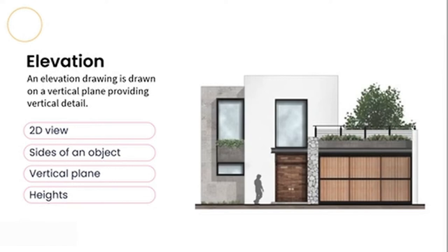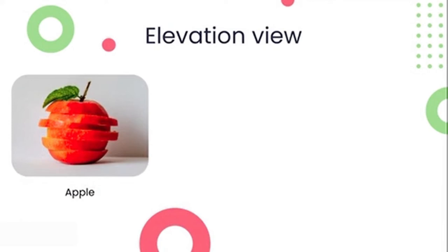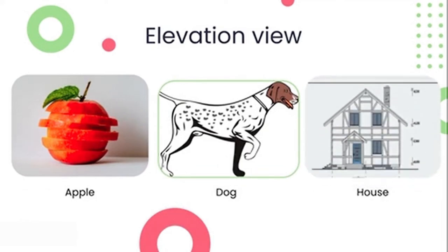In this example, you can see this is quite a tall building — probably about two to three levels. Elevations are not common only to buildings but can be created from almost anything. For example, I've got an elevation of an apple, which is the side view of the apple; an elevation of a dog — again, a side view; and lastly, an elevation of a house, which is a side view of one side of the house.